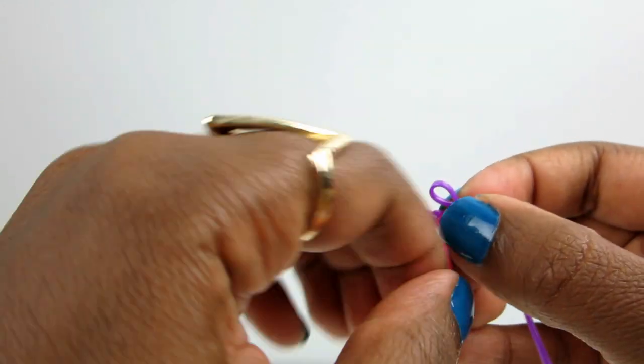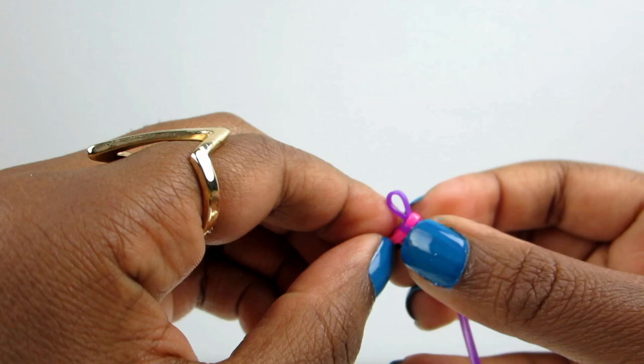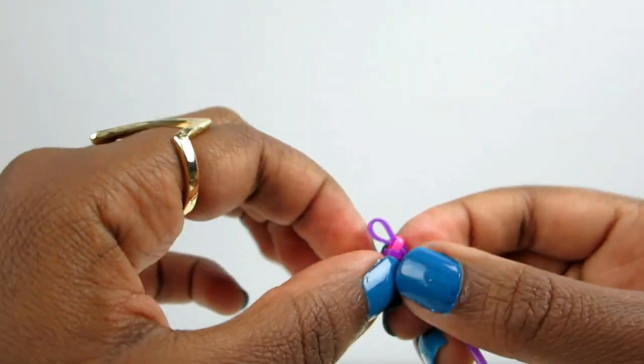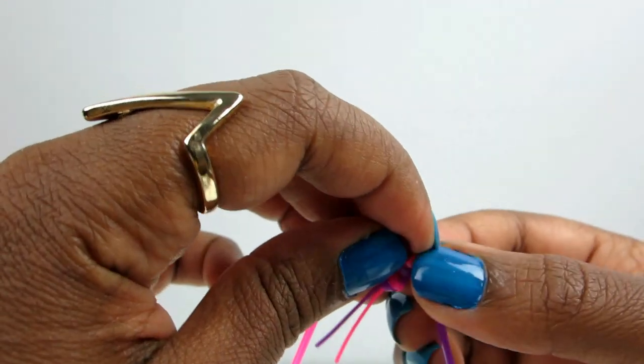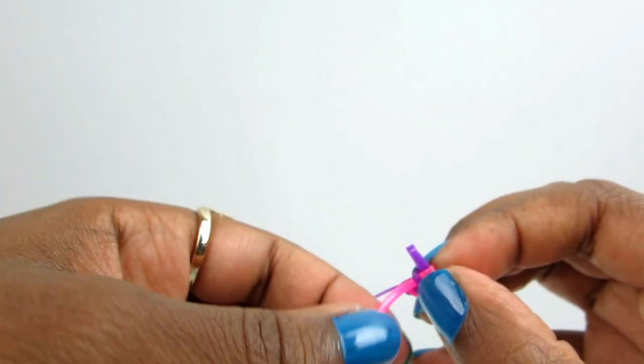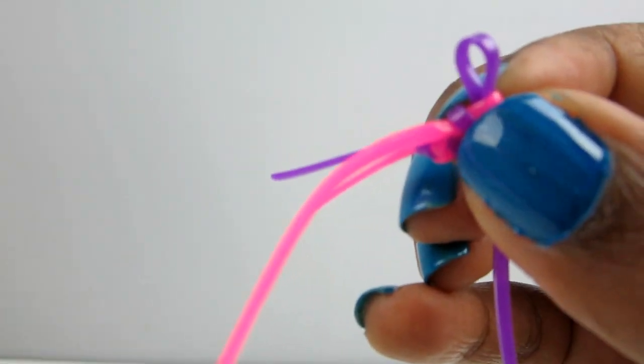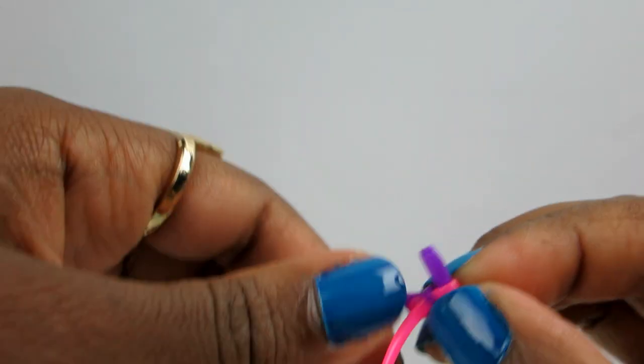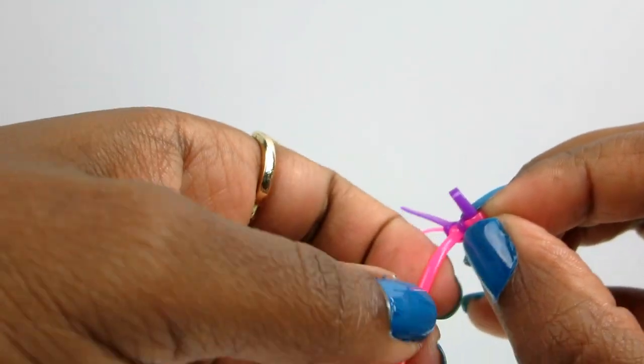And so basically how it goes is when the purple is the loop, the loophole, let's just call it loophole, it's easier than rabbits and all that jazz. So when the purple is the loop,